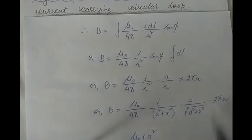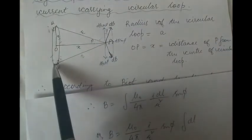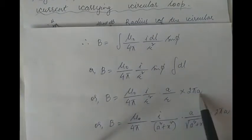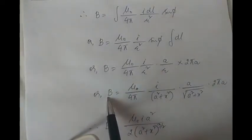Integration of dL gives the circumference of the circle, which is 2πA. Also, sin φ = A/R from the geometry (perpendicular over hypotenuse). Using Pythagoras theorem, R² = A² + X², so instead of R² we write (A² + X²) and instead of sin φ we write A/√(A² + X²). Therefore B = μ₀/4π · I/R² · (A/R) · 2πA. Simplifying, we get B = μ₀ I A² / [2(A² + X²)^(3/2)].